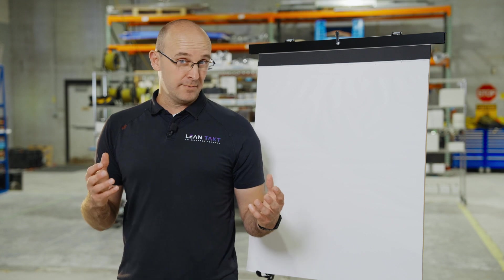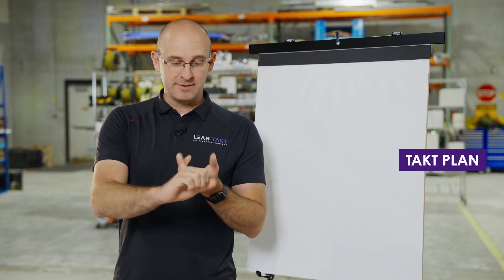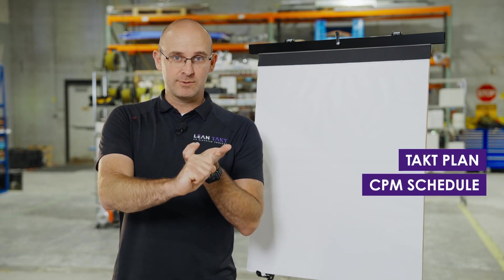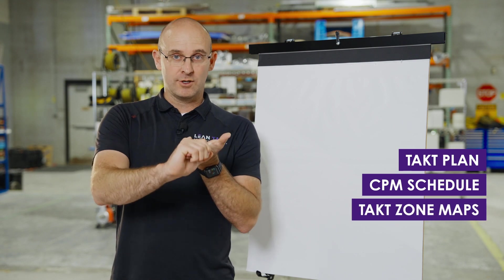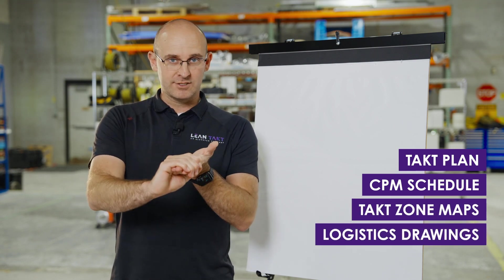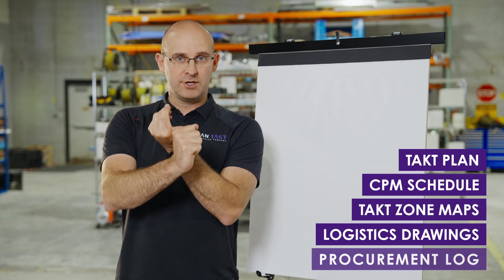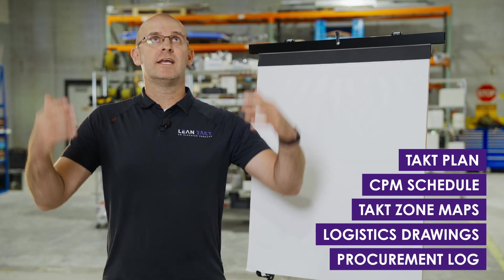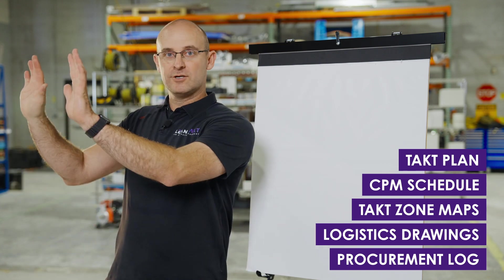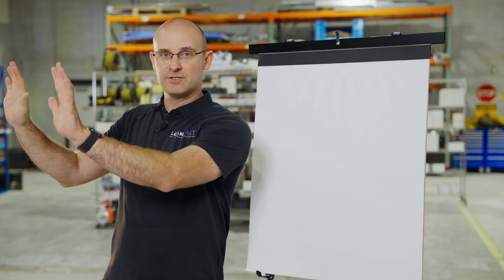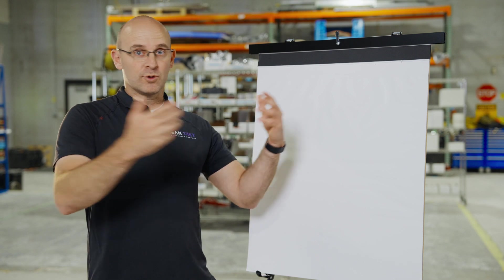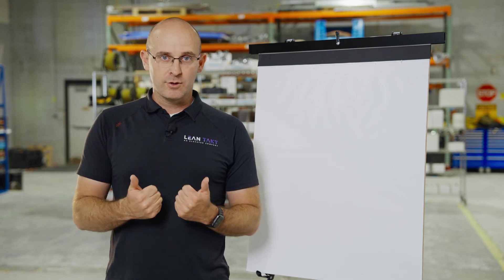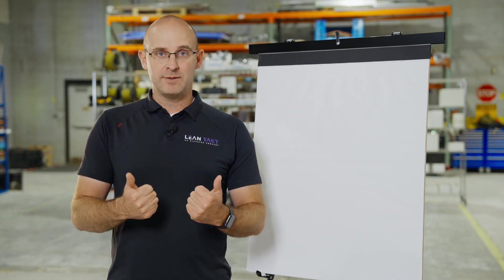Here are the requirements for the meeting. You'll need your takt plan, your CPM schedule if that's a requirement, your takt zone maps, your logistics drawings, and most especially your procurement log unless it's already on the schedule. If you have that in a visual format, hopefully in your trailer with really nice visuals and screens or print it out.